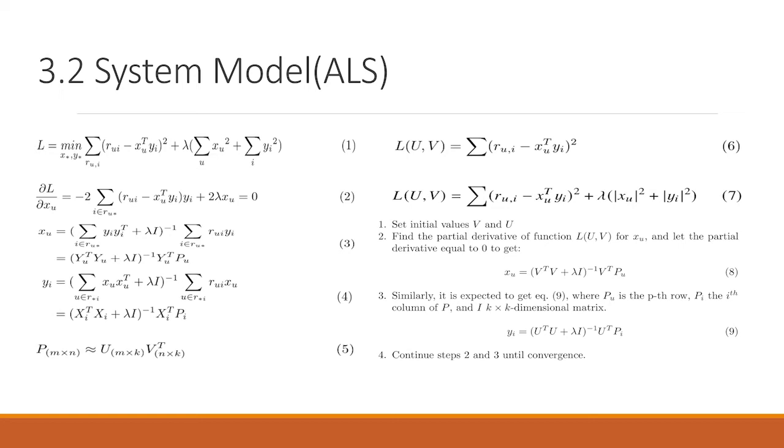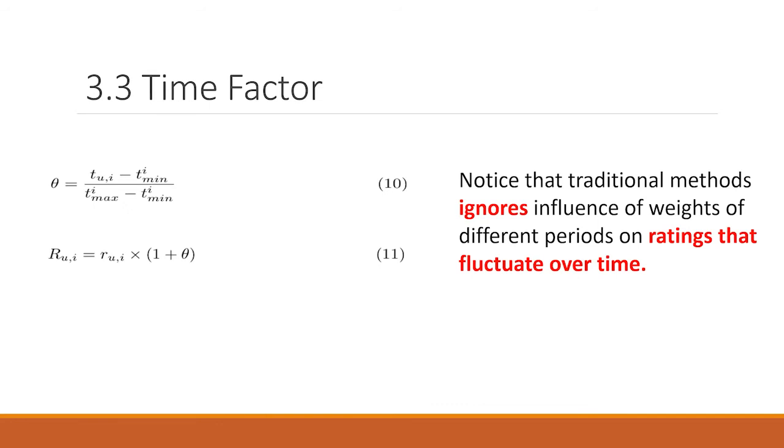So we consider time factor. In equation 10, we rearrange the rating. It happens frequently that movies with low rating at initial releasing periods become classical along with time. Thus, the time factor should be one of criteria in ratings. Notice that traditional factors are a gross influence of weights of different periods and ratings that change over time.